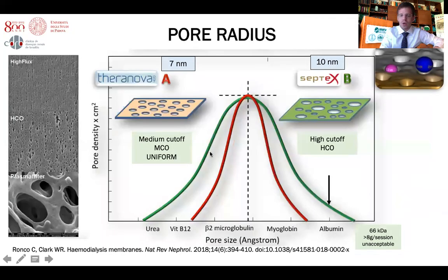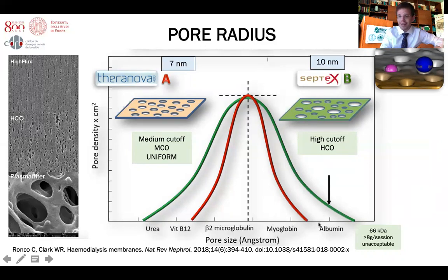When we put those curves together, we see the main difference between a median cutoff membrane and a high cutoff membrane: uniformity. The range of pore sizes in a median cutoff membrane is narrower, whereas it is wider with a high cutoff membrane, which allows the undesirable extraction of albumin.